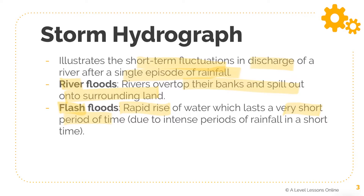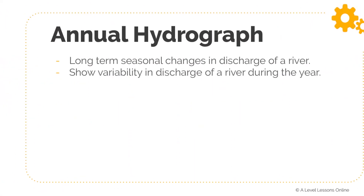Flash floods occur over a very short period of time when there is an intense amount of rainfall such that the river channel cannot handle it at all. The river will definitely overflow and cause a flash flood.